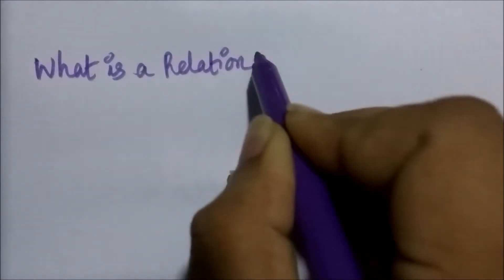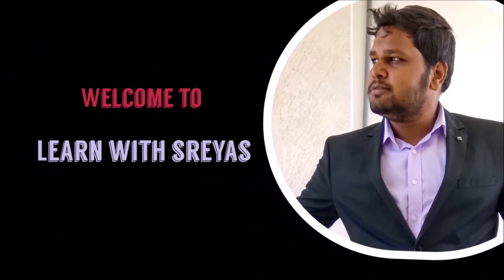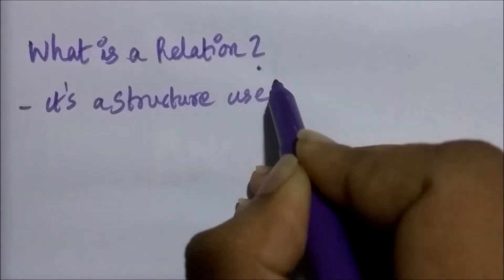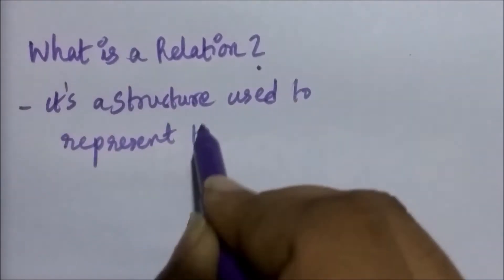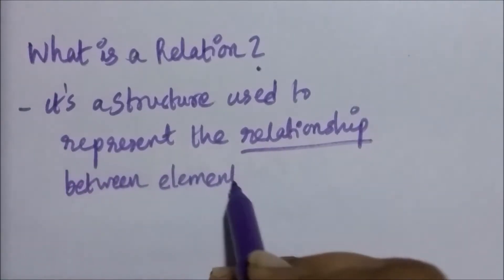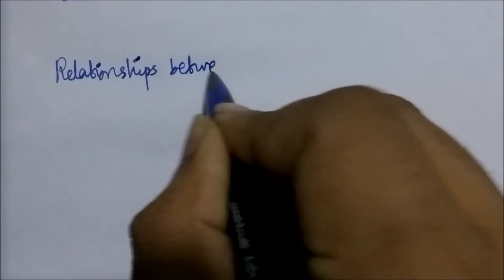Hello friends. Today we will see what is the meaning of the term relation when it comes to set theory or discrete mathematics. A relation is nothing but a structure used to represent the relationship between elements of sets, and the relationship between elements of sets occurs in many contexts.